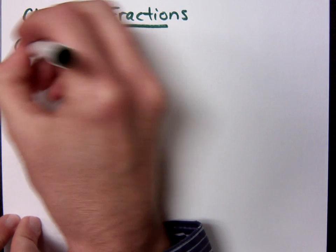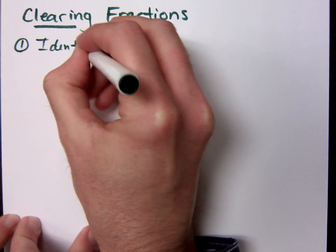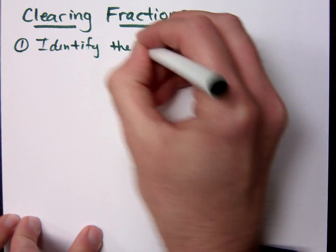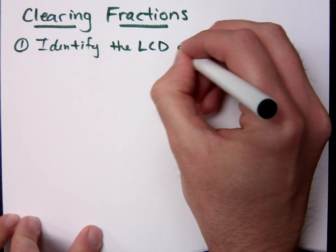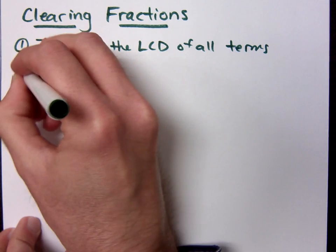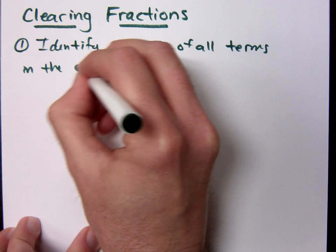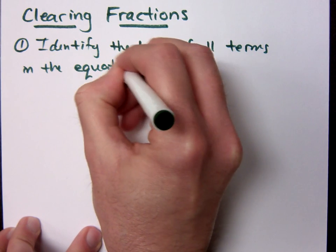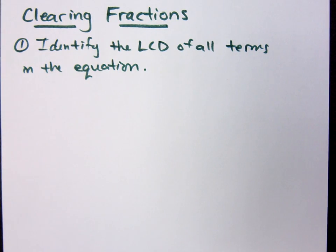The first thing you need to do is identify the LCD of all terms in the equation. Identify the least common denominator for all terms in the equation.